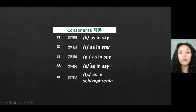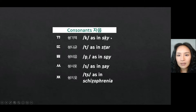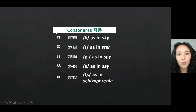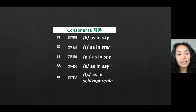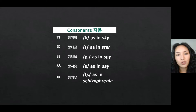Now, consonants. If you duplicate a basic consonant, it becomes tensed. Look at this phonological environment. For example, the first one: the basic form goes G, but if it's duplicated, it goes K — no voice, no aspiration. It sounds like K as in 'sky.'